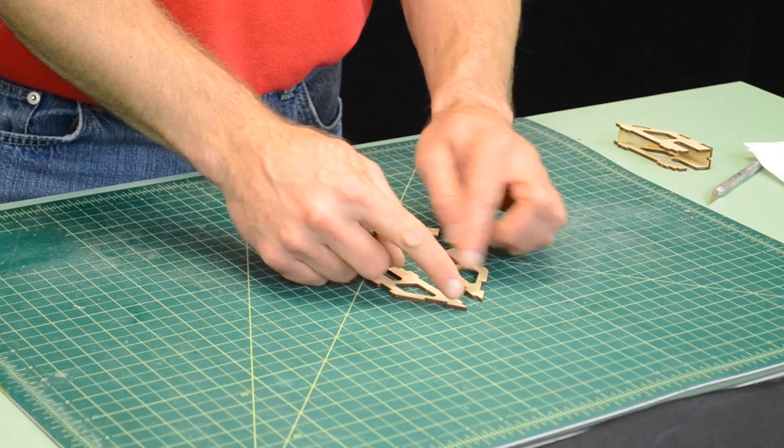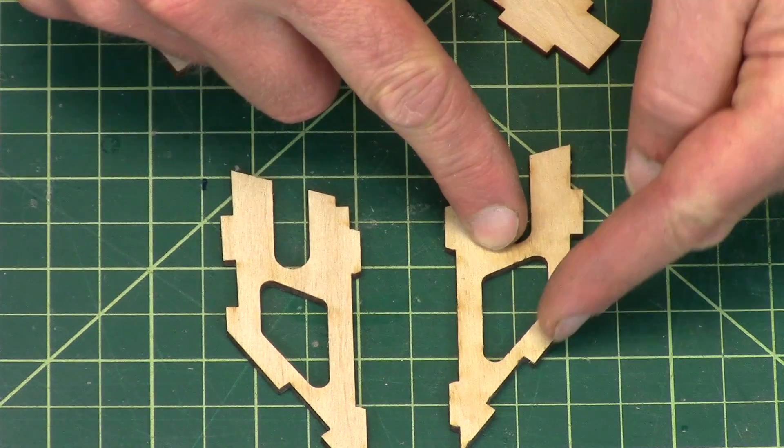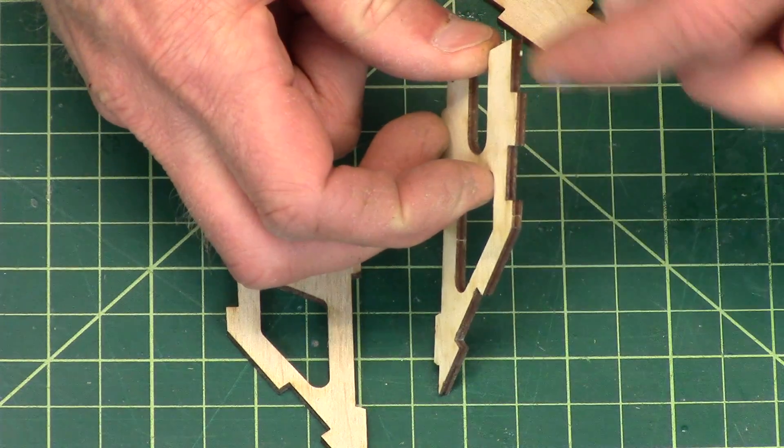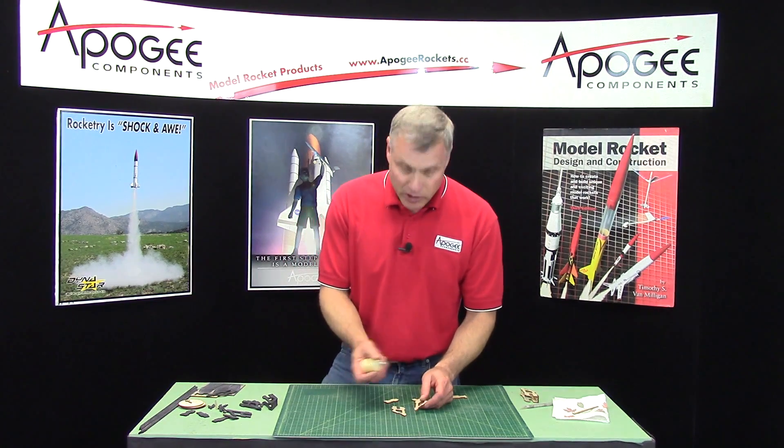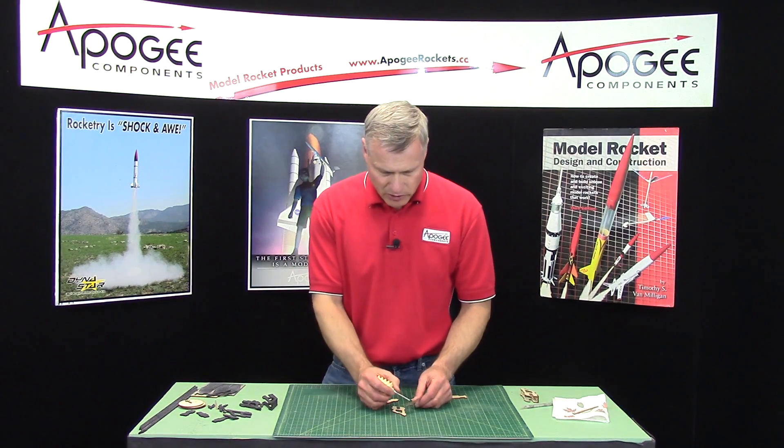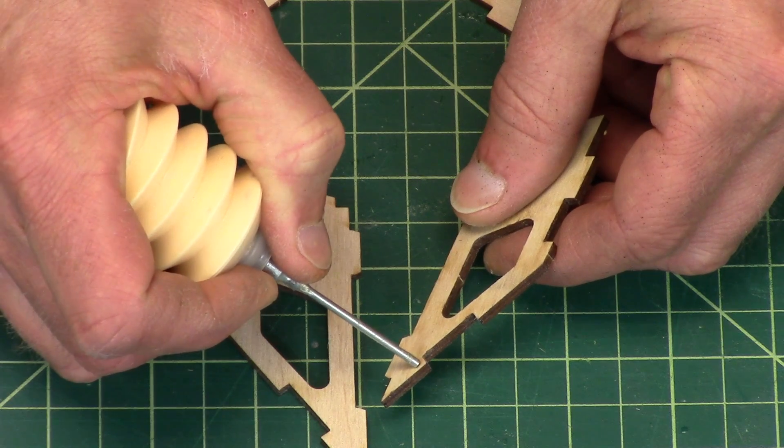So I'm going to put glue along the sides where they touch and then into the pockets. And I've got my handy-dandy glue applicator, but you can use just a regular wood glue bottle. That will work too. It's just a little bit messier.